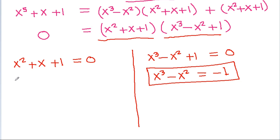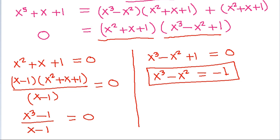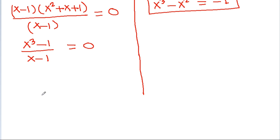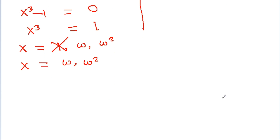And if we multiply by x minus 1 and divide by x minus 1, then x minus 1 times x square plus x plus 1 is x cube minus 1, divided by x minus 1 equals 0. So x cube minus 1 equals 0, meaning x equals 1, omega, and omega square. And we know x is not equal to 1, so x equals omega or omega square.